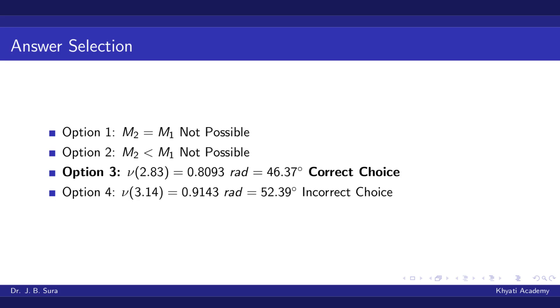So we have two options: option three, Mach is 2.83, and 3.14. Let's calculate the Prandtl-Meyer function for both Mach numbers. For 3.14, you will get ν as 52.39, which is an incorrect choice.